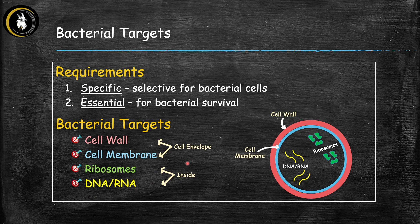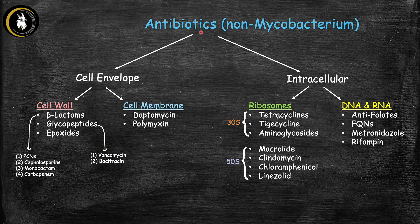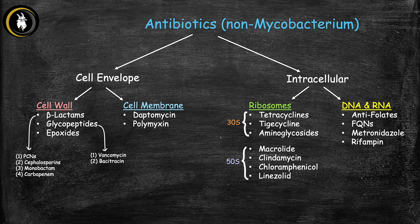In this final slide, the antibiotics effective against most bacteria are organized by target: cell envelope inhibitors include cell wall inhibitors and cell membrane inhibitors with their respective drug classes. Inside the bacteria, ribosome inhibitors include those attacking the 30S ribosome and those attacking the 50S ribosome. And then there are antibiotics that target bacterial DNA and RNA. In subsequent videos, we'll go through each of these drug classes.